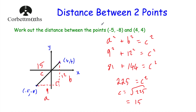So in this video, we've been looking at how to find the distance between two points, or how to find the length of the line joining two points. To do that, I just use Pythagoras's theorem — join up the points, create a little right-angle triangle, and then use Pythagoras's theorem, and that'll tell you the length of the line or the distance between those points.